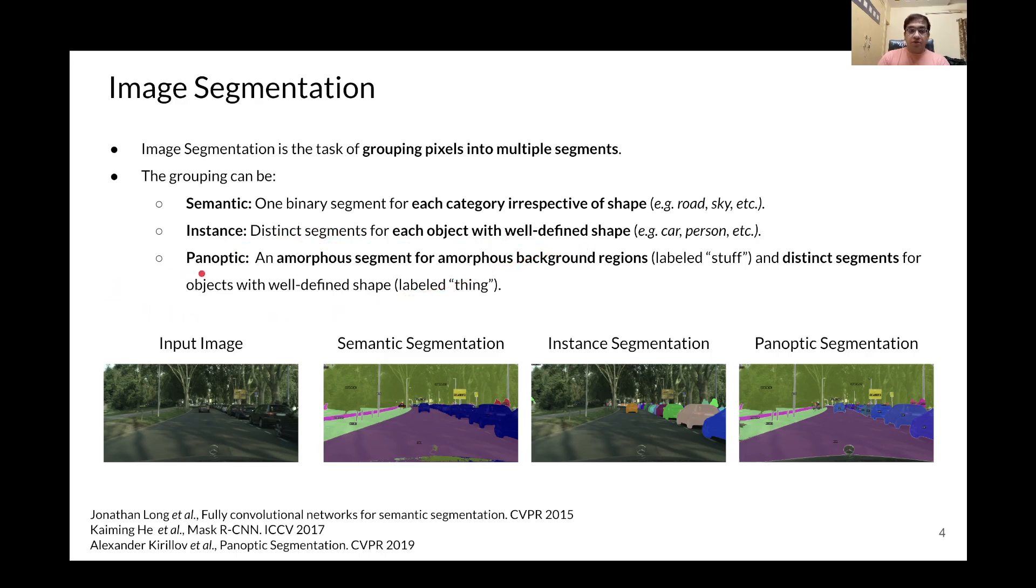And third can be panoptic, where we try to mask out an amorphous segment for amorphous background regions, which are labeled as stuff, and distinct segments for objects with well-defined shape, which are labeled as things.